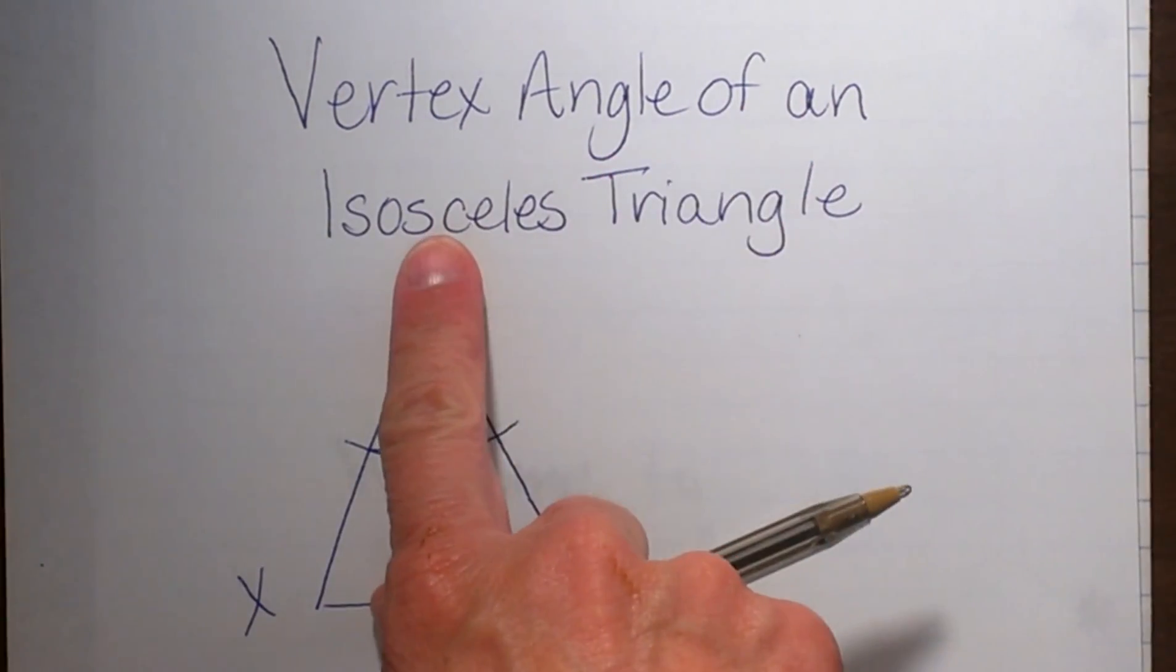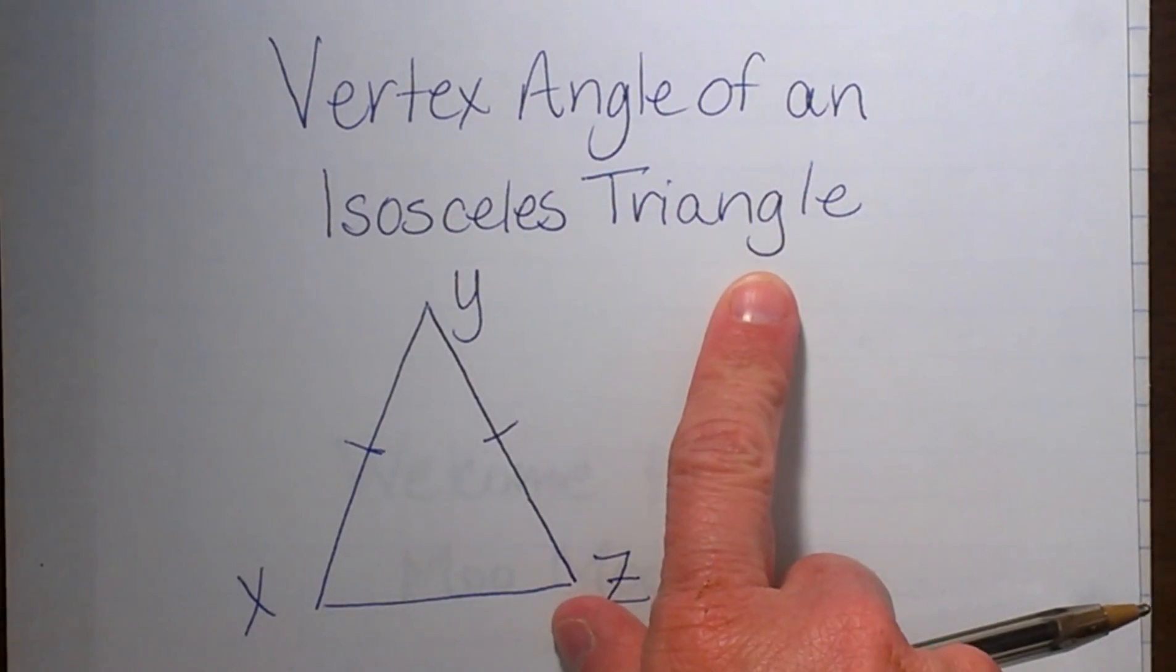We are going to look at the vertex angle of an isosceles triangle. Well first of all, what is an isosceles triangle?